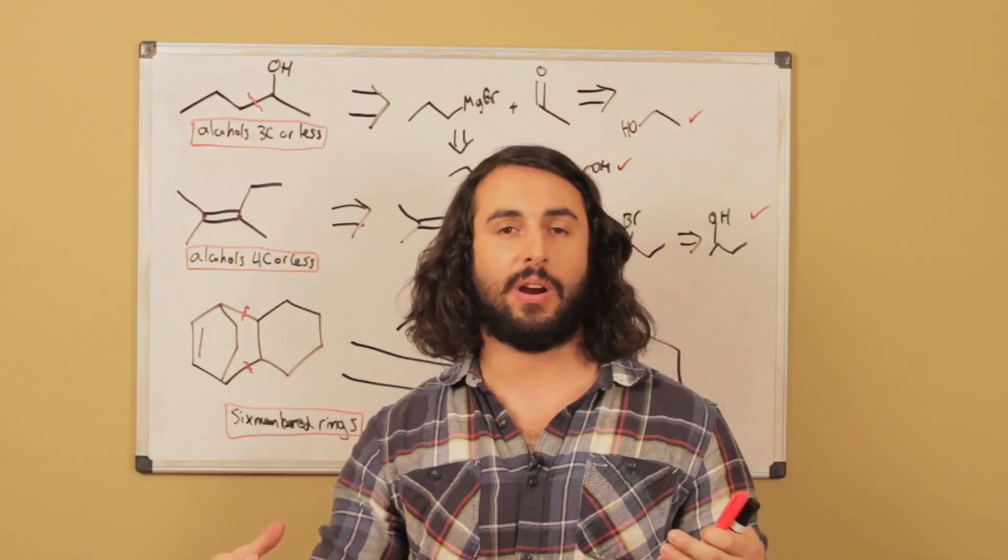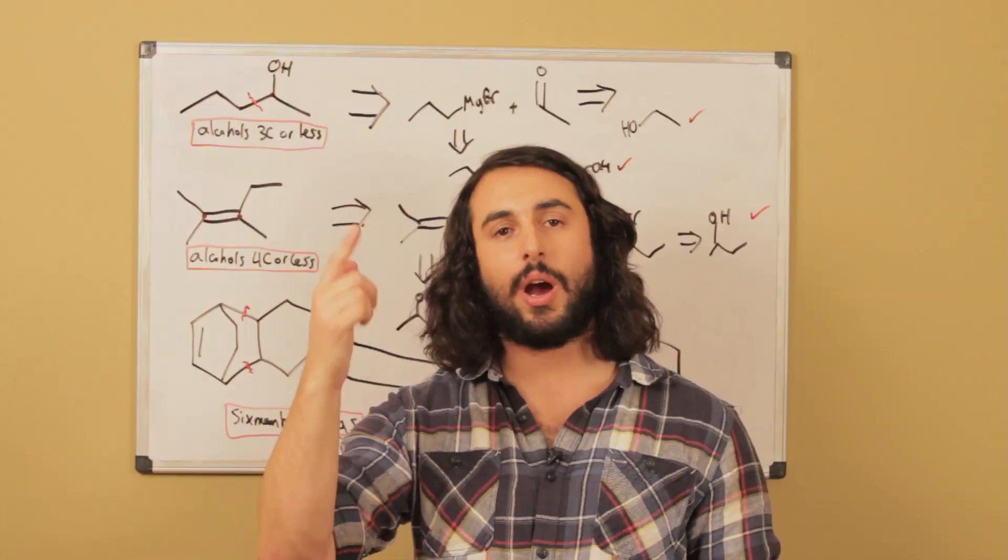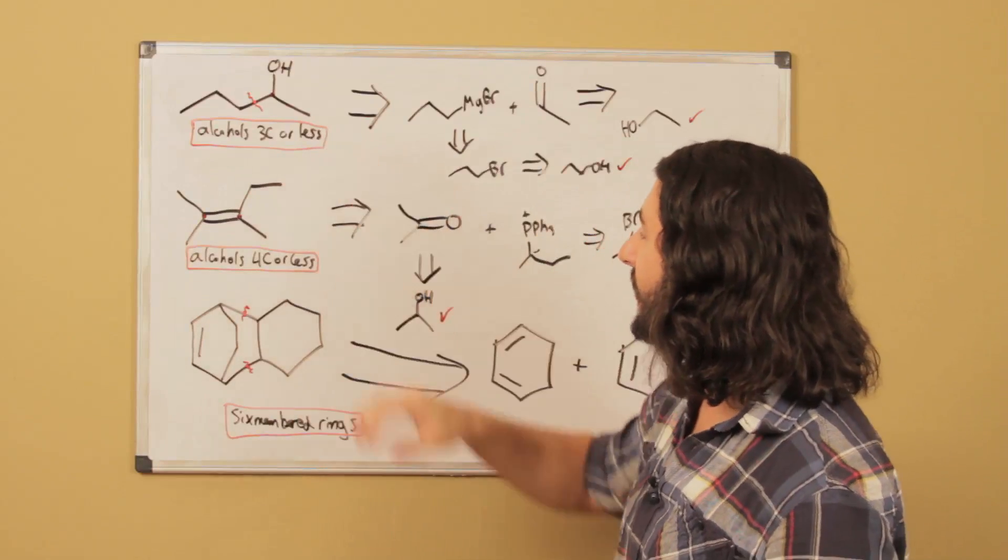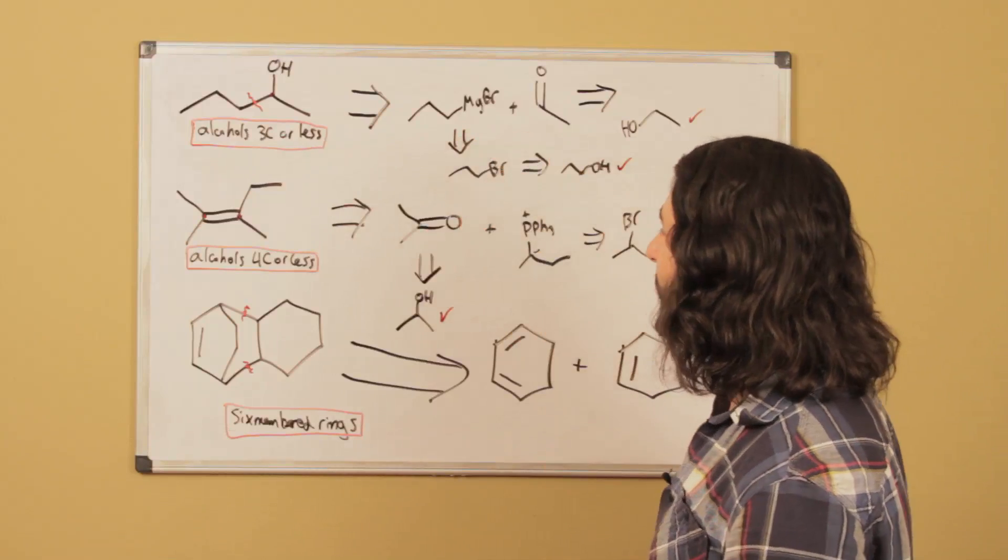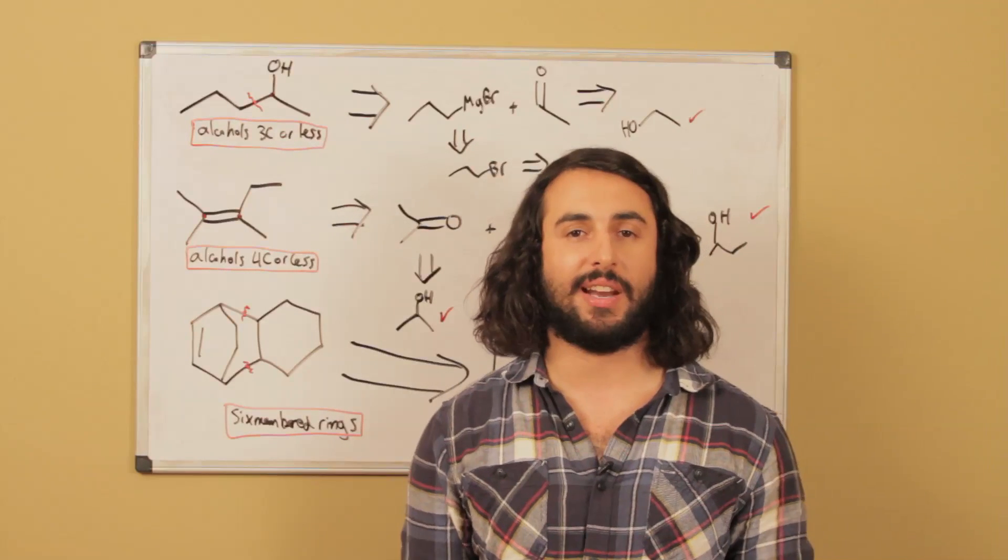The key thing to understand with retrosynthetic analysis is that we're always looking at a target molecule and strategically pulling it apart in ways that make sense. For everything we undo, we know a way to redo it. If you have some designated starting material, you need to keep going until you get there. These are the basics of any retrosynthetic analysis.